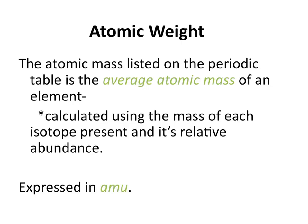The atomic weight of an atom is the atomic mass that's listed on the periodic table, and it's expressed in AMUs. The other important thing to note is that the value listed on your periodic table is an average atomic mass, calculated using the mass of each isotope present of a certain element in its relative abundance.